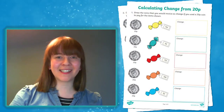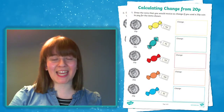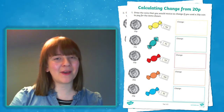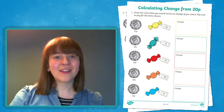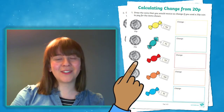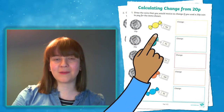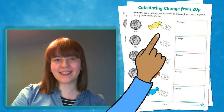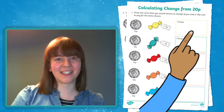Once your child is confident in calculating the change from 10 pence, this activity makes the perfect next step. The first two questions give children a 20 pence coin followed by a sweet with a price tag, and it asks them to draw the coins they would receive as change.